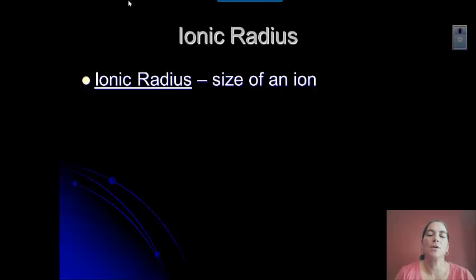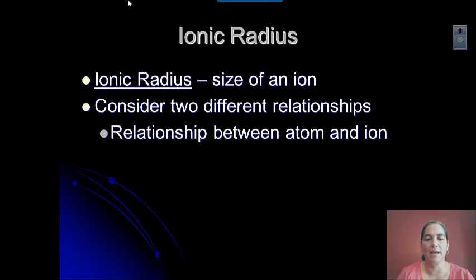So you need to think about the trend. It's different than the atomic radius, electronegativity, and ionization energy trends. Those are pretty straightforward. They go in one direction. Ionic radius is a little bit different because we have to look at two different relationships.